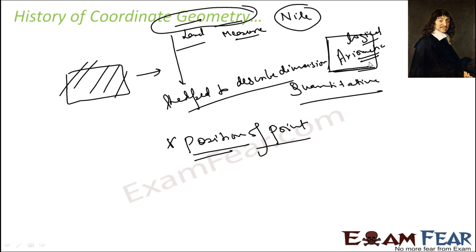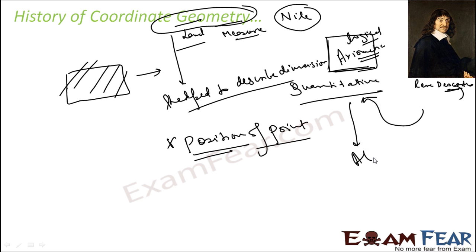This is where René Descartes came in. He developed the coordinate geometry system, which made the whole geometry quantitative. And since it was now quantitative, you could use algebraic methods — you could add or multiply shapes — and the whole geometry system evolved.